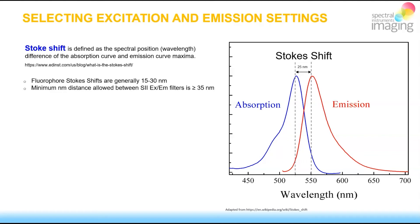The general answer is that you want to stagger slightly to the left of the absorption maximum with your selection of the excite LED filter, and slightly to the right of the emission maximum with your selection of the emission filter. With those general guidelines in mind, let's look at an example.